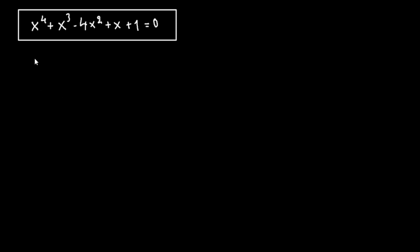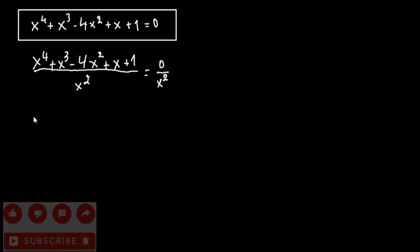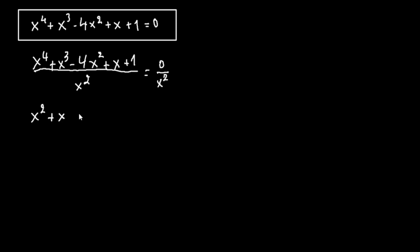To solve this, first we're going to divide by x squared. So we have x to the fourth plus x to the third minus 4x squared plus x plus 1, all divided by x squared, equals 0. This becomes x squared plus x minus 4 plus 1 over x plus 1 over x squared equals 0.